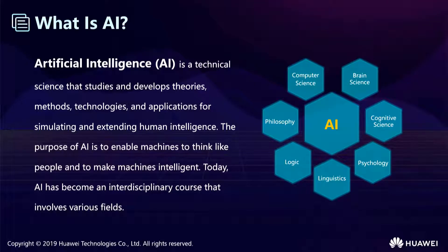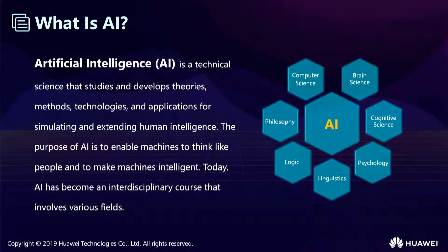AI is a technical science. The purpose of AI is to make machines more intelligent and more efficient. AI has become an interdisciplinary field that involves various fields such as computer science, brain science, cognitive science, psychology, linguistics, logic, and philosophy. AI has come into every field in our daily life.